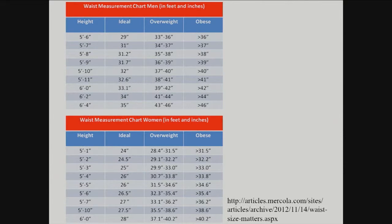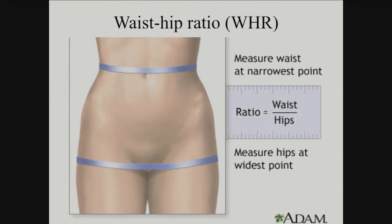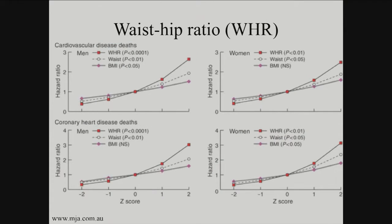Another measure, which is a little more refined, is waist-to-hip ratio. So you take the circumference of your waist divided by the circumference of your hip to get a ratio. Studies have shown that this is actually much better correlated, even than just waist circumference itself, with the prevalence of diseases.